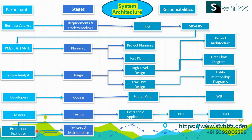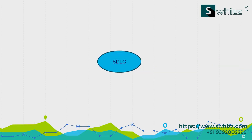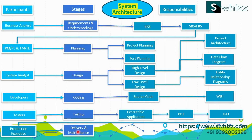Once user acceptance testing is completed, the production executive is responsible for deployment. This is the way software starts from the requirement phase and completes at the delivery and maintenance phase. This is the process or architecture followed in an organization to develop software, and it continues in further sessions where we'll understand different development models.